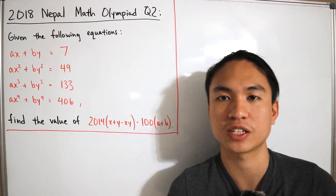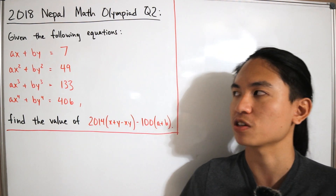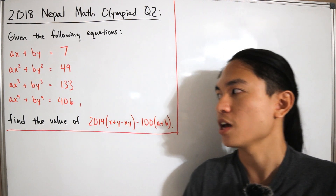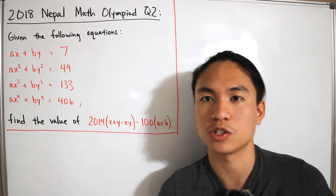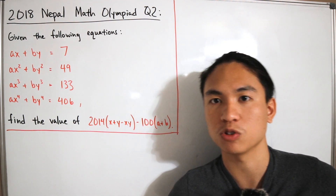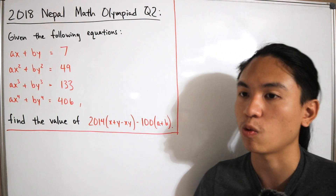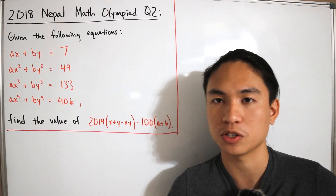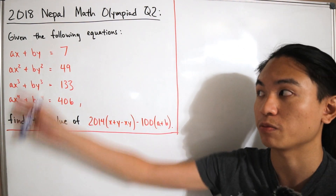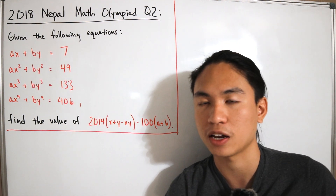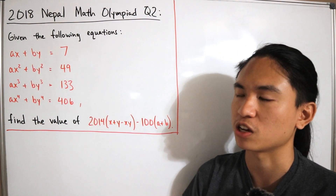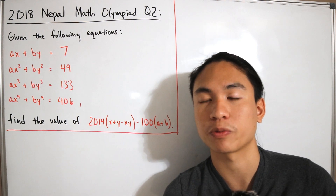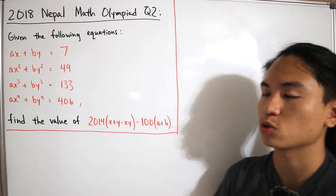At first glance, you might think we need to solve a system of equations finding the individual values of x, y, a, and b. But we're not actually going to do that — solving for each variable separately would be quite difficult when dealing with linear, quadratic, cubic, and fourth-degree equations.